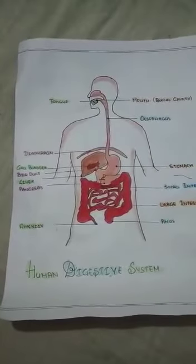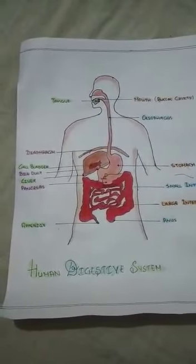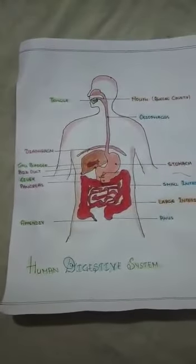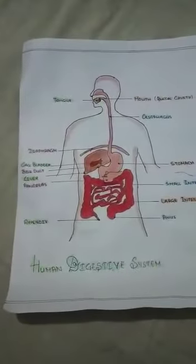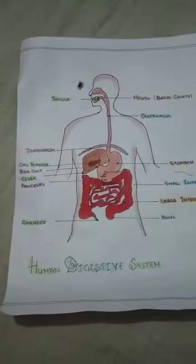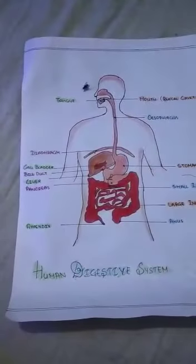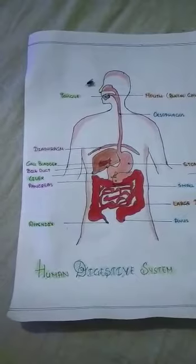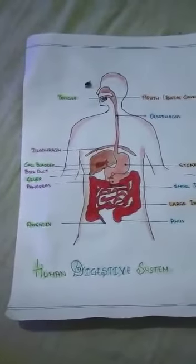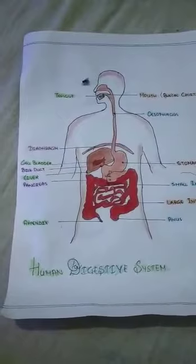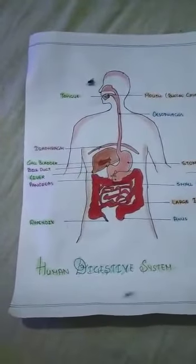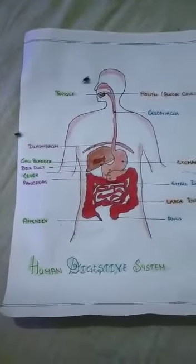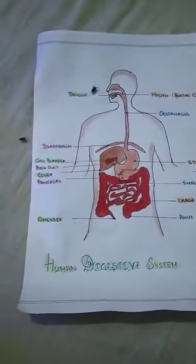The stomach takes food for 3 to 4 hours and digests it. The glands present in the stomach produce gastric juice. This juice contains three substances: hydrochloric acid, pepsin enzyme and mucus. The main role is of the pepsin enzyme, which digests protein and converts it into smaller molecules. Hydrochloric acid is acidic in nature, which makes the gastric juice acidic so the enzyme pepsin can work, and it also kills bacteria which may enter the stomach.